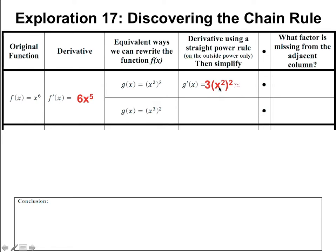We need 6x to the 5th, but we have 3x to the fourth. So we're missing a factor of 2x. If we had that extra factor of 2x and multiplied it by 3x to the fourth, we'd get 6x to the 5th. We have to figure out how to incorporate this missing factor to get the right answer.